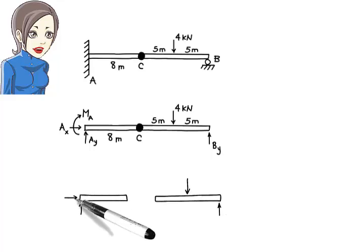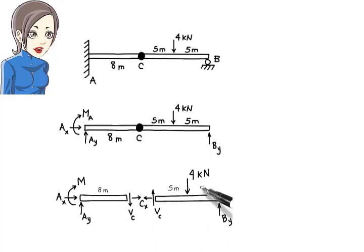Here is the free body diagram for each beam segment. Observe that the internal shear force at the hinge is drawn on each beam segment. On the left segment, the force is shown to act downward. On the right segment, the force is drawn upward. These two arrows must always be drawn in opposing directions.